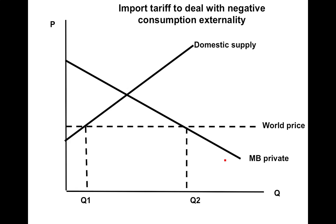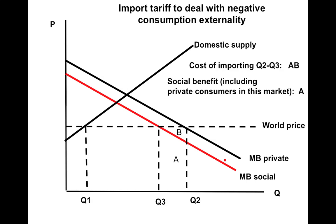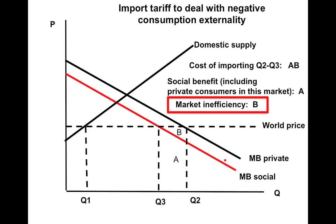Taking this into the import market of a small country: the marginal benefit of private consumption again exceeds the marginal social benefit. From society's standpoint, Q3 is the optimal quantity; Q2 is what consumers decide to buy. The cost of importing this excess consumption from foreigners is AB — the world price multiplied by that quantity. The social benefit, the area under the social demand curve, is area A, so we have a market inefficiency of B. In this instance, imports ought to be Q1 to Q3, but they are in fact Q1 to Q2 without government intervention — too much consumption of this imported good.